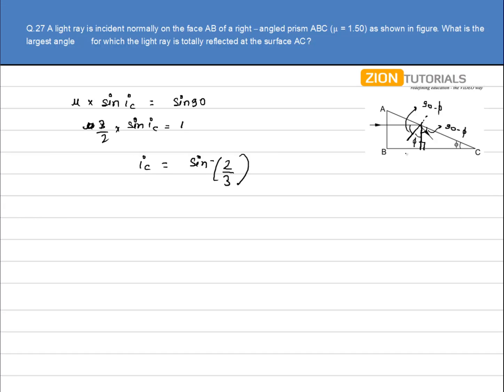Now the ray must be totally reflected at surface AC. For total reflection, 90 minus phi, the angle of incidence here, must be greater than IC. So phi must be less than 90 minus IC.